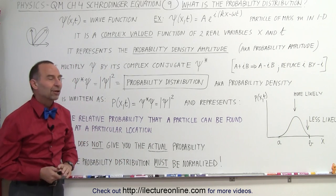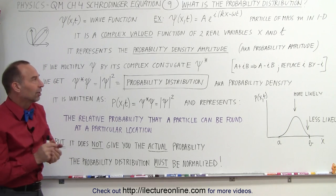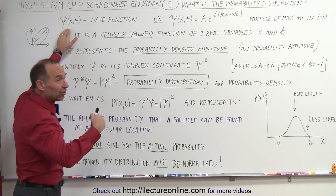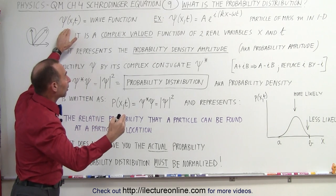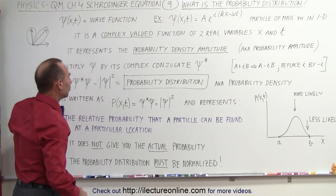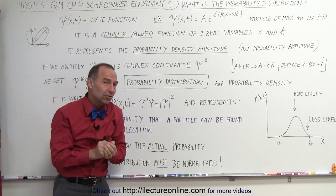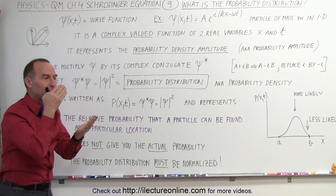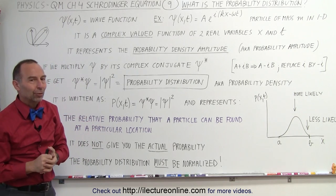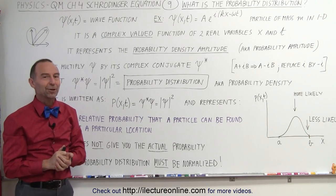And that we're going to show you in the next video. Finally, we then will have a connection between the Schrödinger equation — the wave equation representing something about a particle that satisfied the Schrödinger equation — and how to use the wave equation to actually come up with what we can get out of the information, which is the probability of finding a particle at a particular location. So stay tuned, and we'll show you how to do that in the next video.